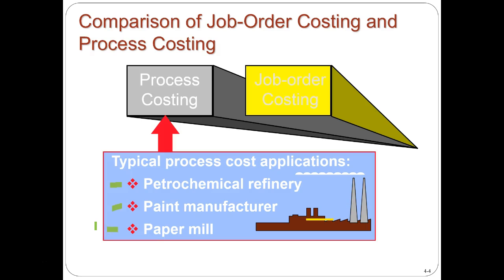Even if you don't plan to work in a process cost or job cost system, much of what we learn will still be relevant. We're going to go through T-accounts and the flow of materials. It's also good to know these differences when job hunting, since you may end up specializing in one or the other. The ratio analysis we'll do will also be useful in performance reviews and general analysis.